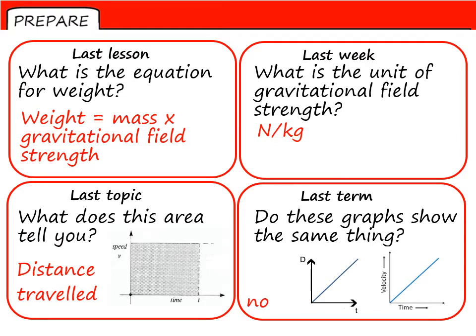The area under a speed time graph tells you distance travelled. And no, these graphs do not show the same thing. The gradient of a distance time graph tells you speed. The gradient of a velocity time graph tells you the acceleration, A. I promise that is an A, I just can't draw with a mouse.